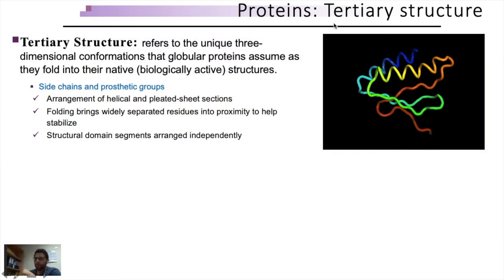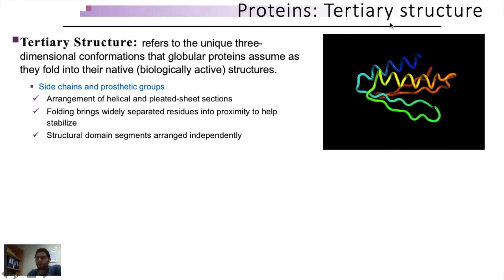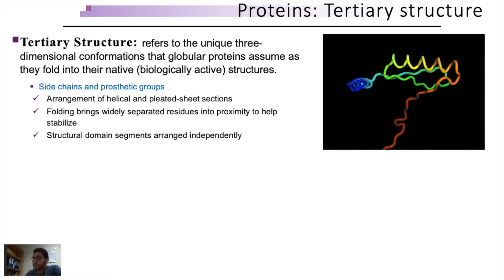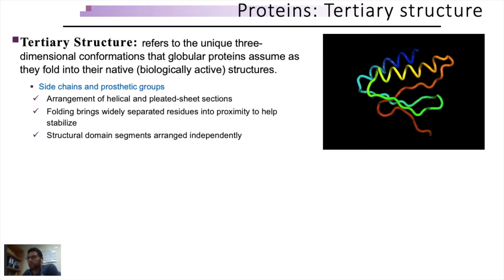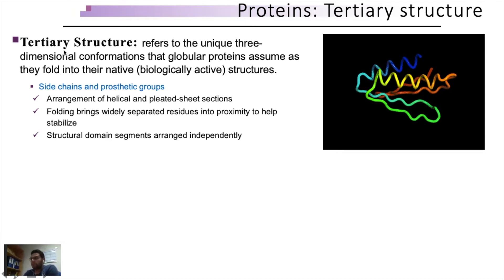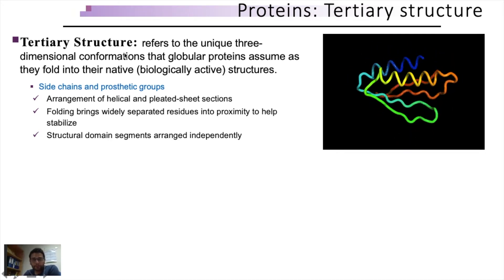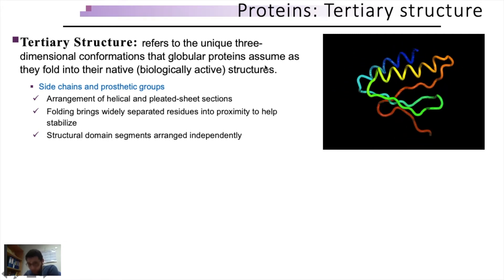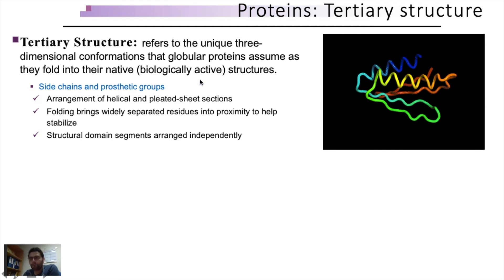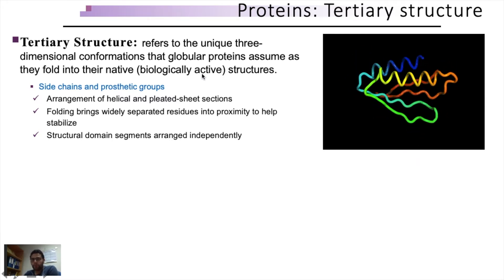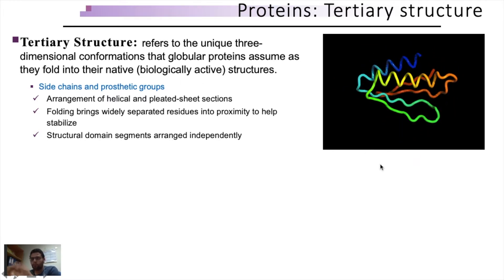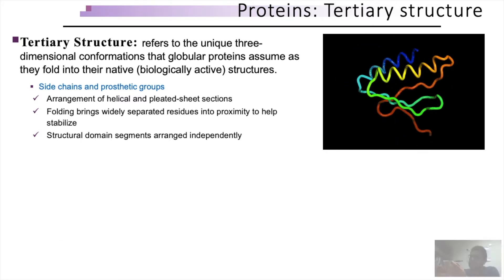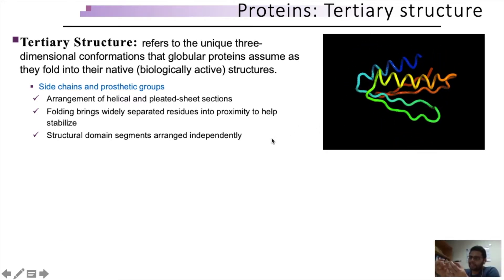Today we are going to discuss the tertiary level of protein organization, which not only depends on the primary and secondary levels but also on the environment in which the protein is present, because the chemical environment heavily impacts protein folding. Tertiary level of protein organization refers to a unique three-dimensional conformation that globular proteins assume as they fold into their native, biologically active state. As a result, the protein molecule becomes an identifiable entity, which previously was just a linearly arranged amino acid sequence.